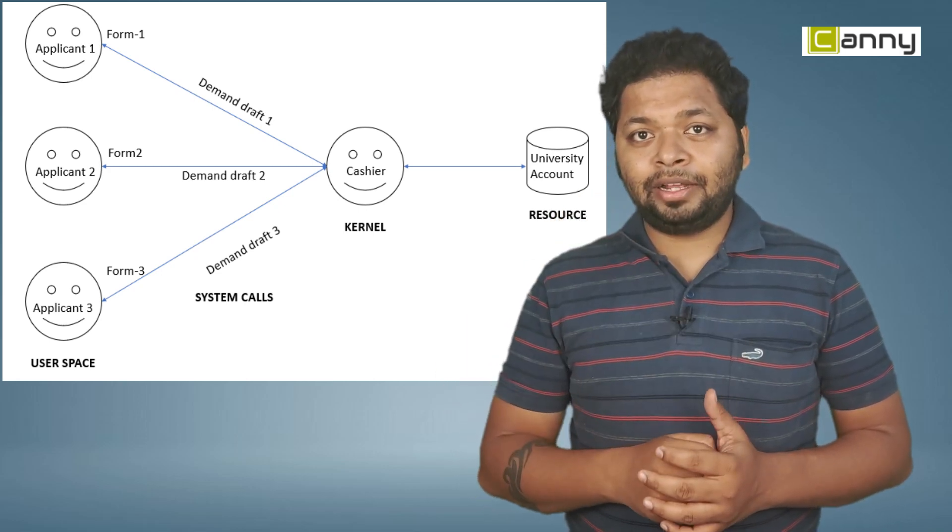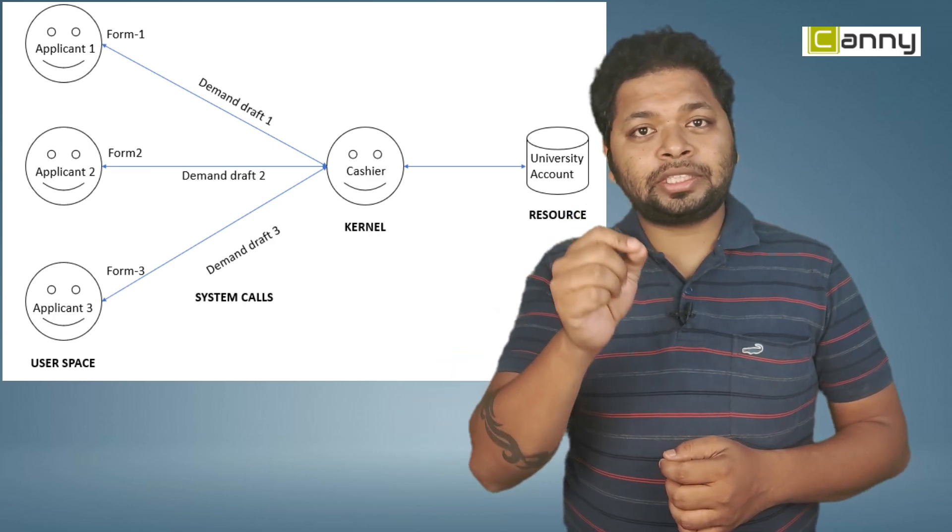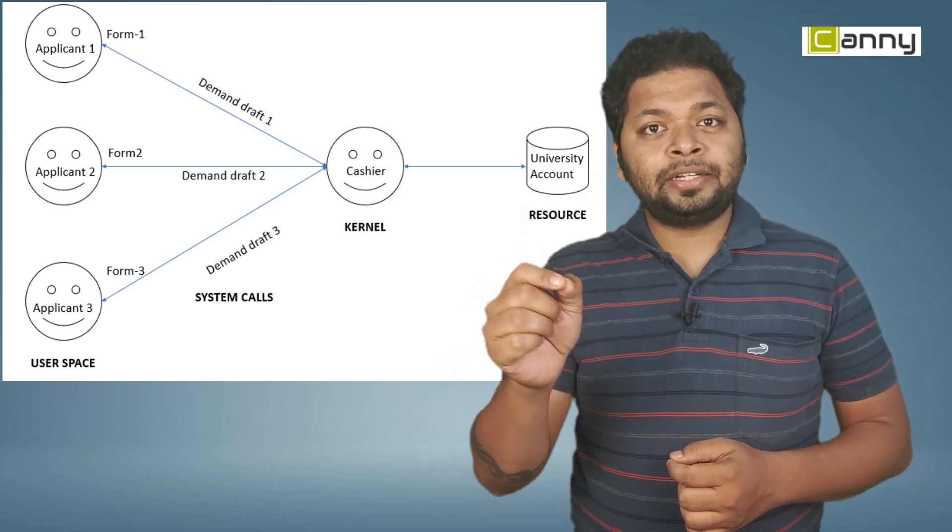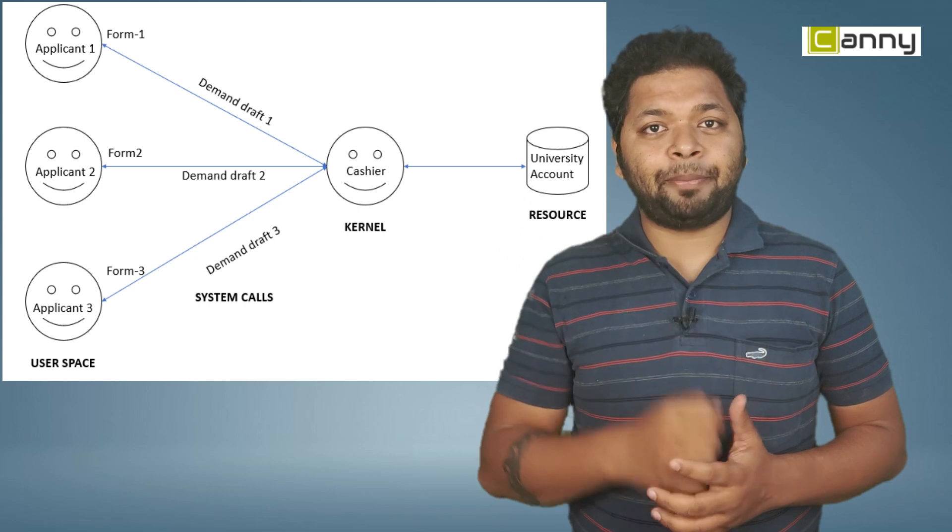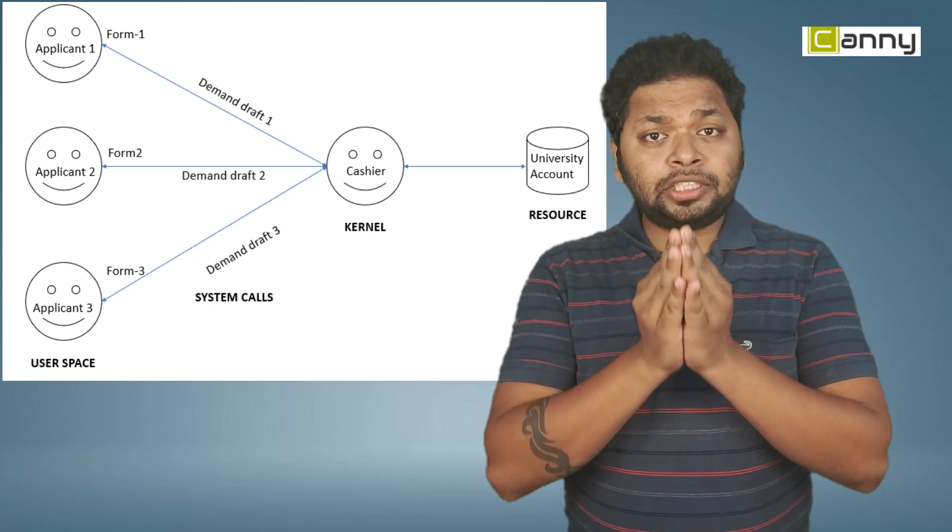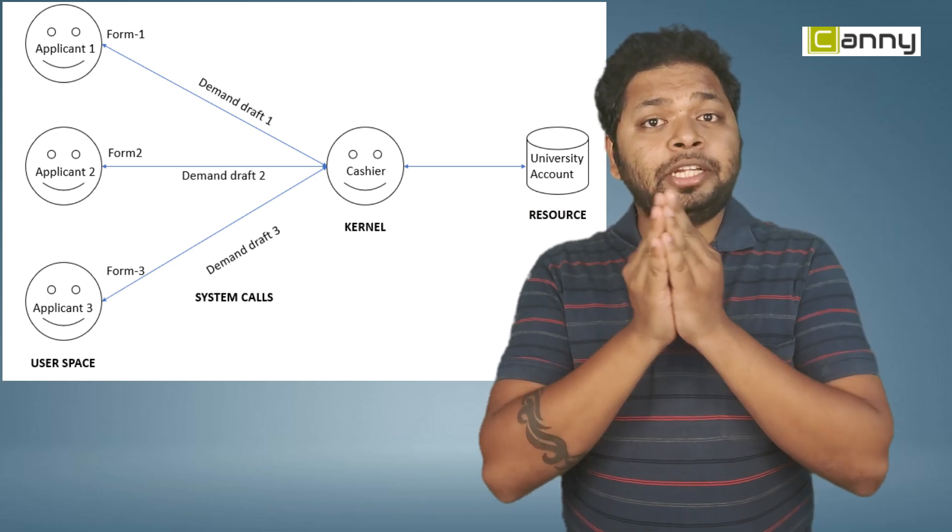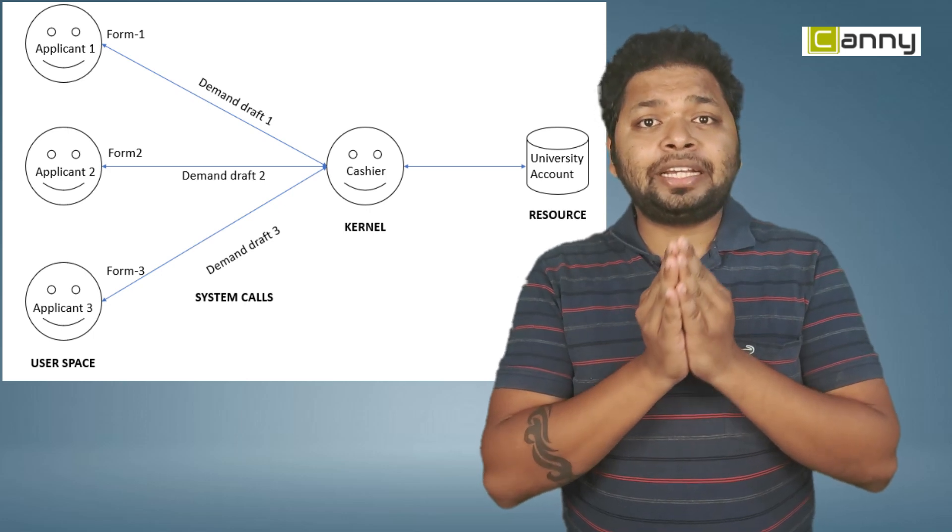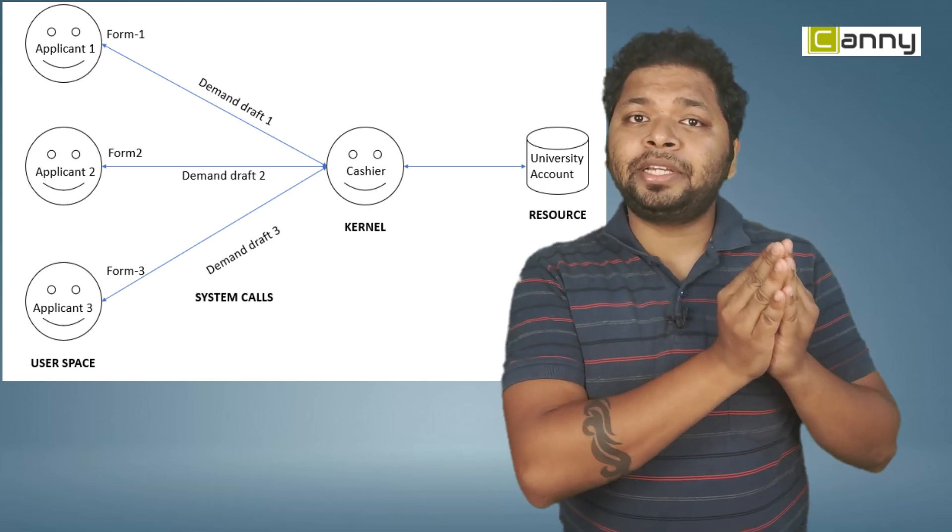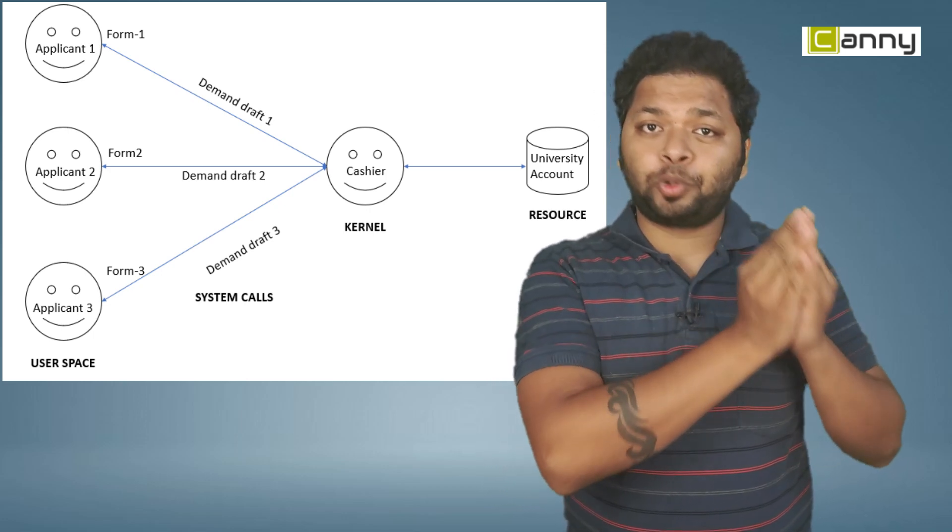Now, in this example, I will explain who is user space, who is kernel space, and how this complete activity happened. Now, each of these individual forms along with the demand draft for each applicant are considered as 100 applications or 100 user space programs.